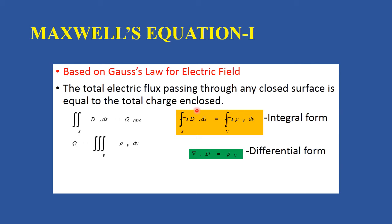Next, we write Maxwell's Equation 1 in differential form. By applying the divergence theorem, we get the differential form. The surface integral of D dot dS becomes del dot D equals rho_v. So, divergence of D equals rho_v. This is the differential form of Maxwell's Equation 1.